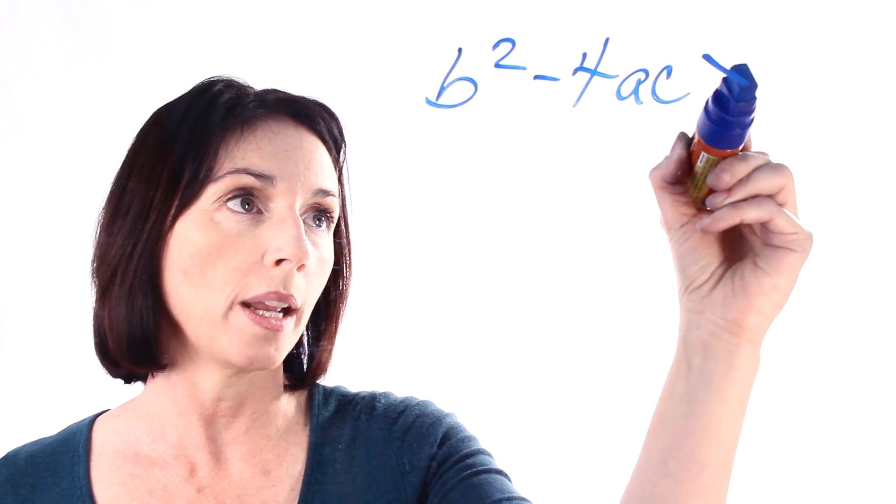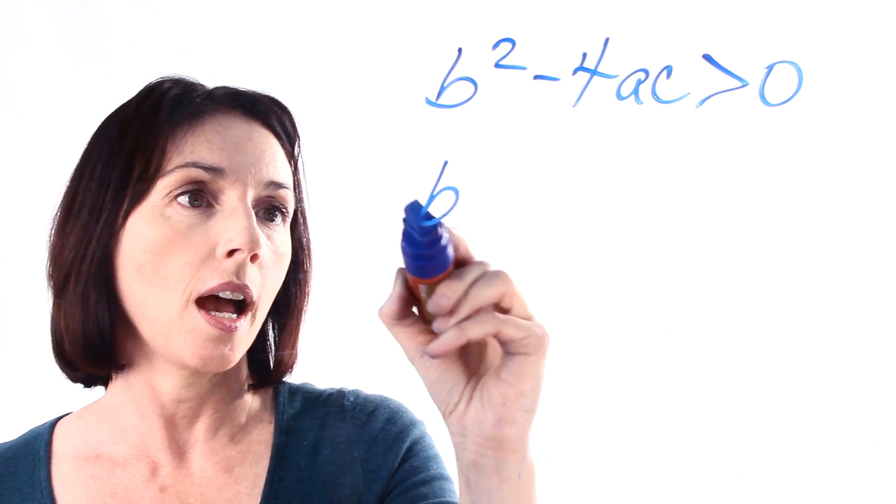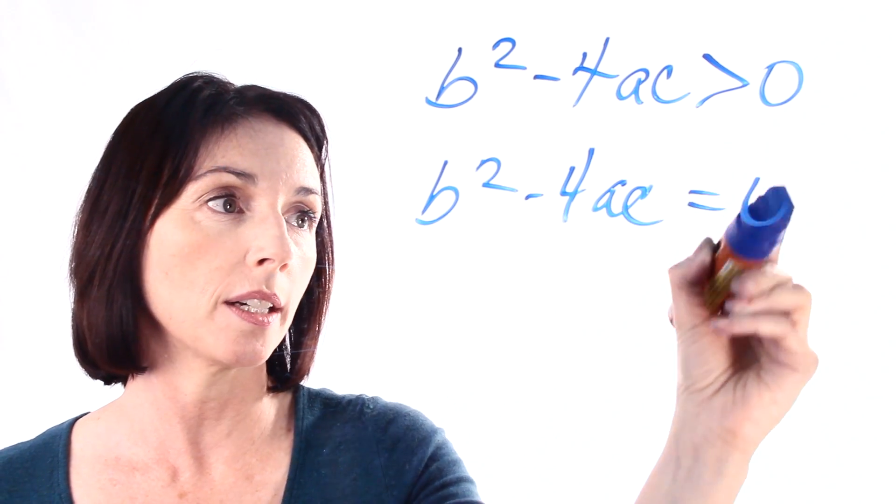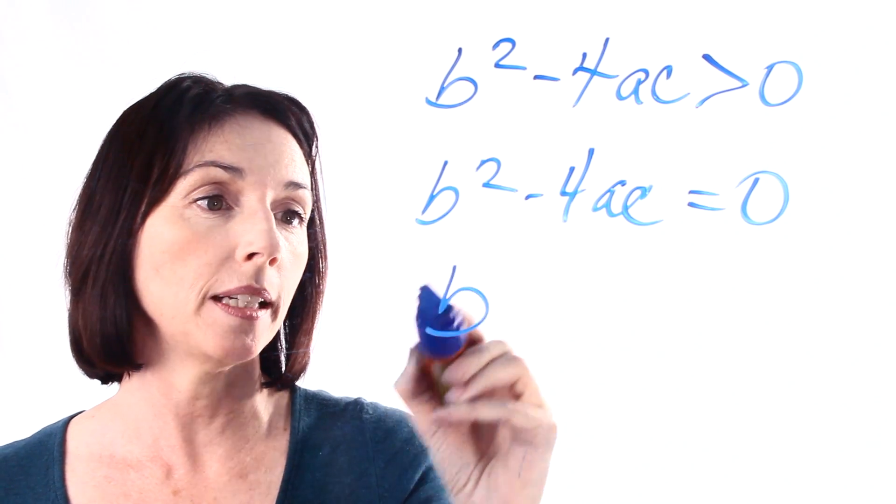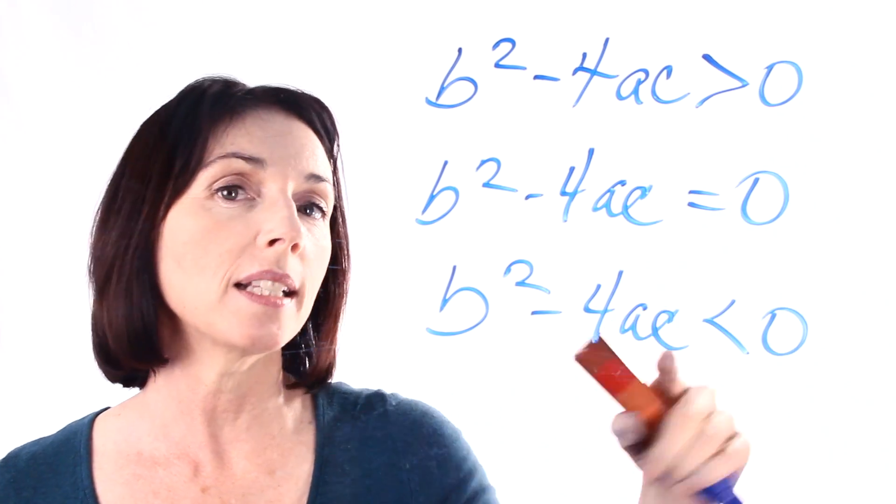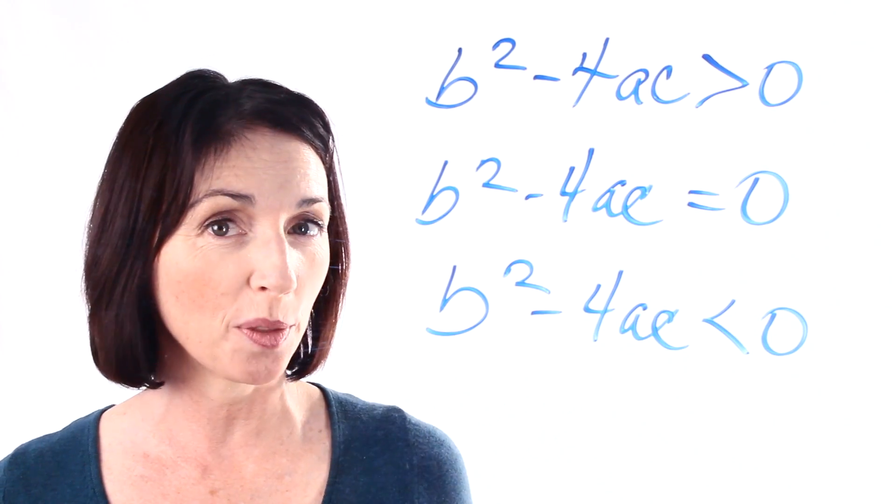One is that this is greater than zero. Another possibility is that it's equal to zero. And the third possibility is that it is less than zero. And each one of these tells you something very specific about the roots.